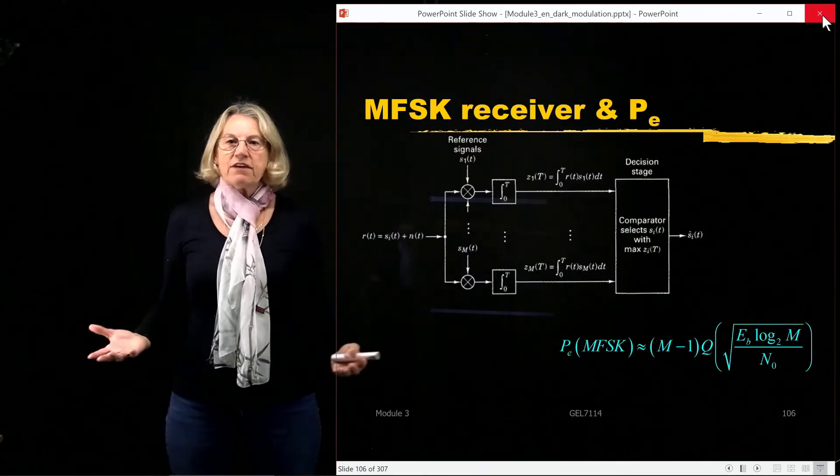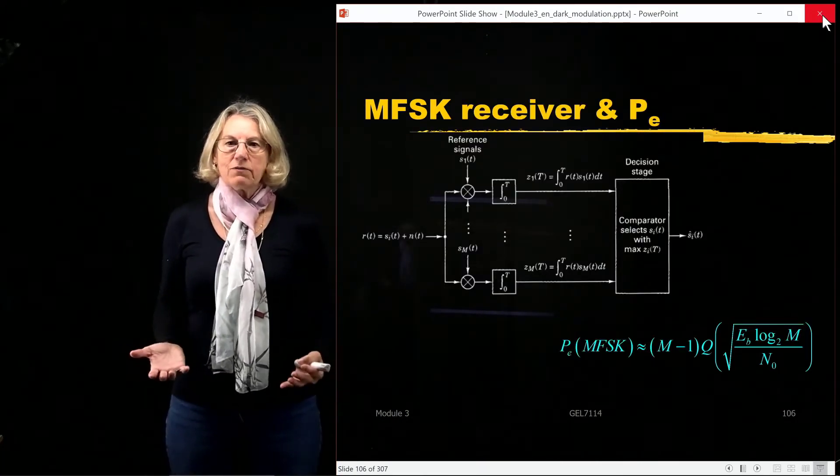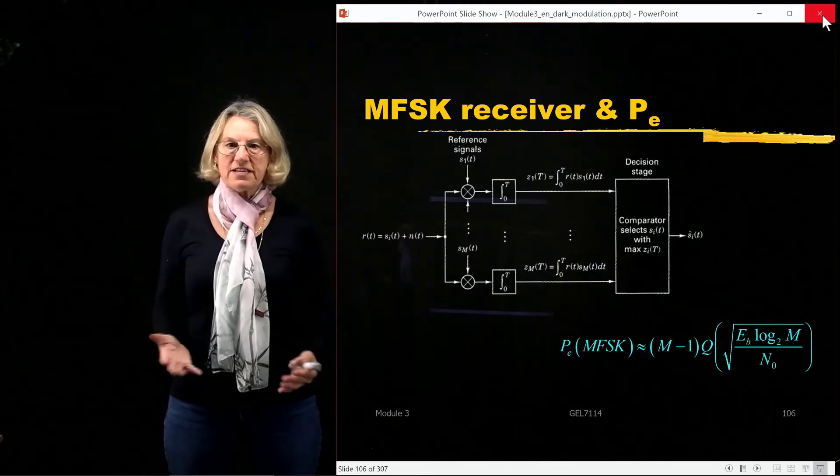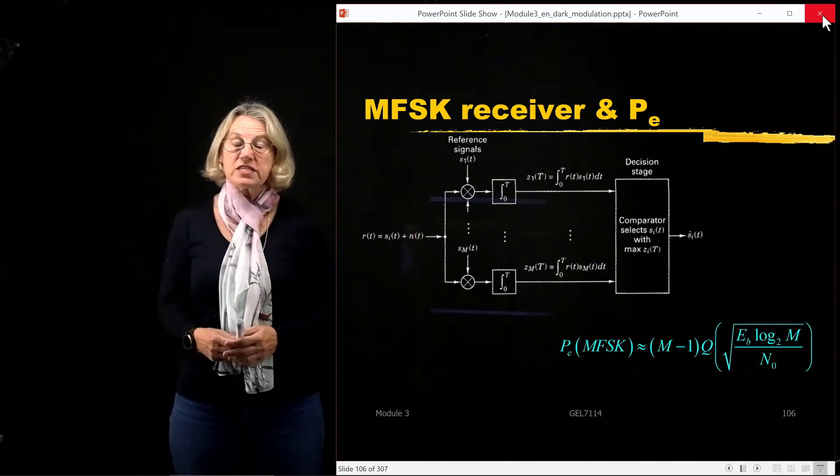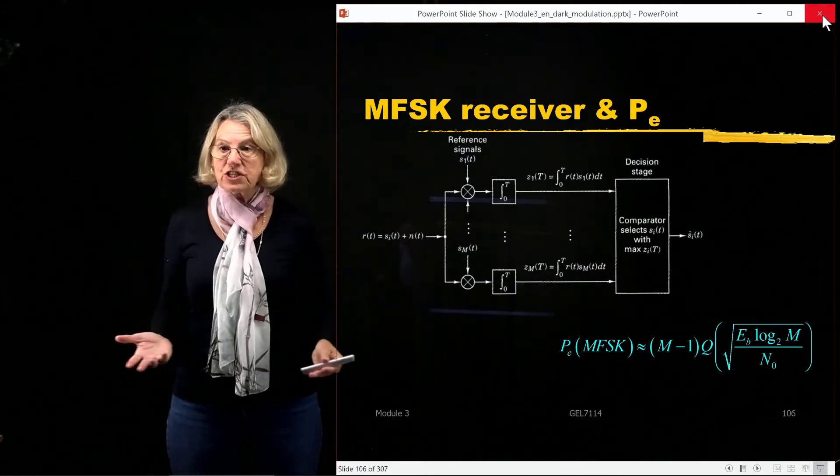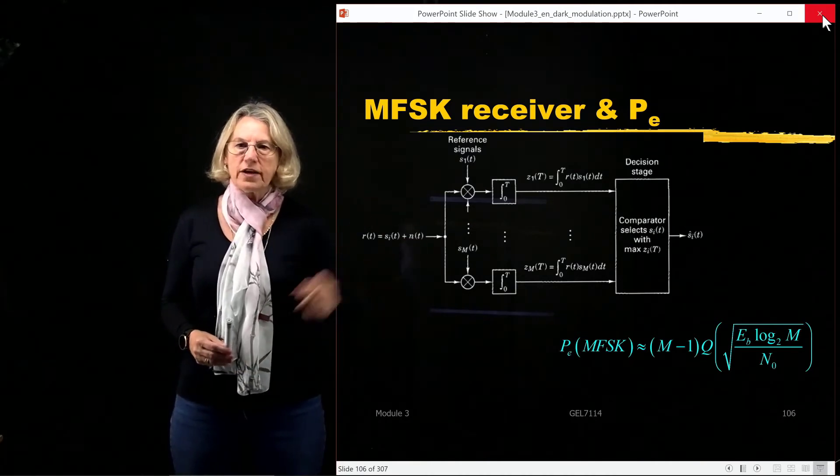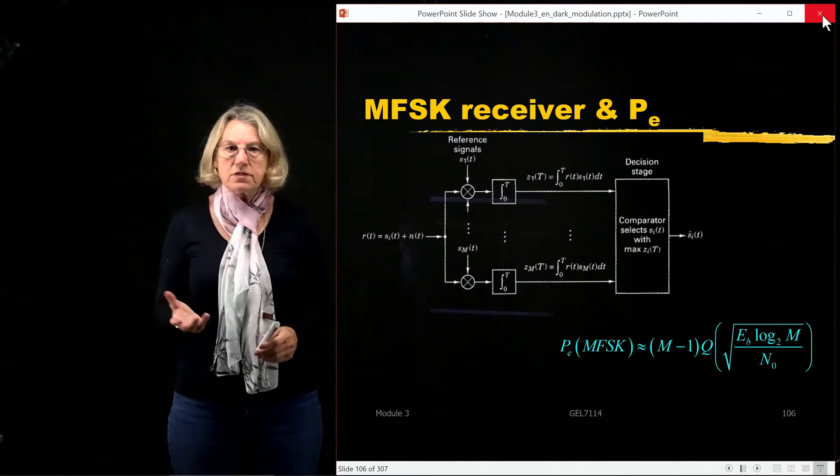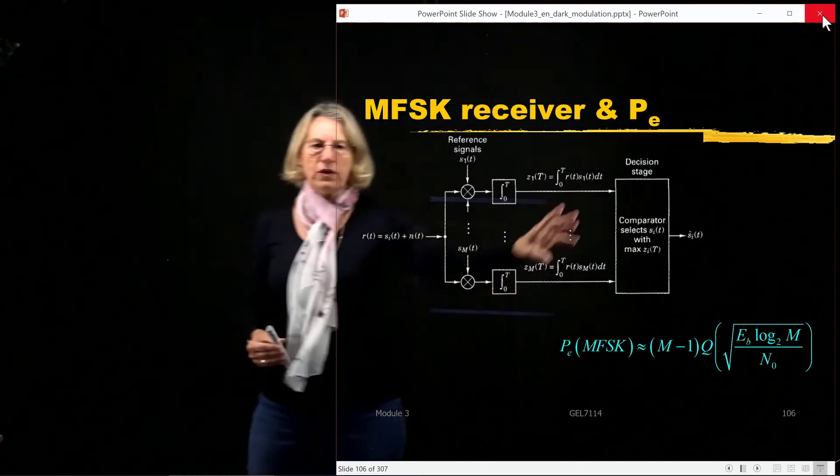So now we have everything we need to describe reception and performance of MFSK. We've seen previously the form of the receiver, and the receiver has m branches. We need one branch for each one of the symbols.